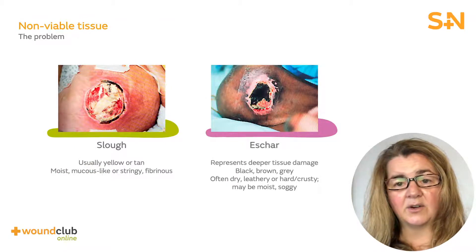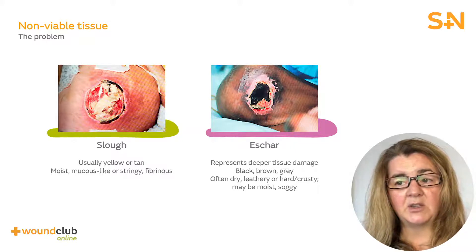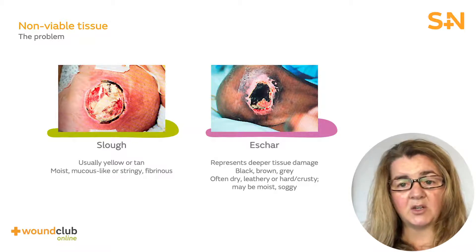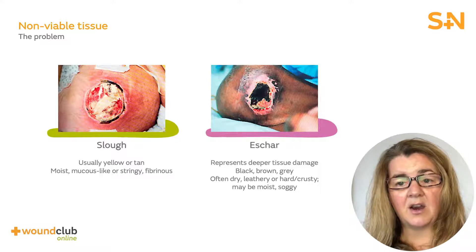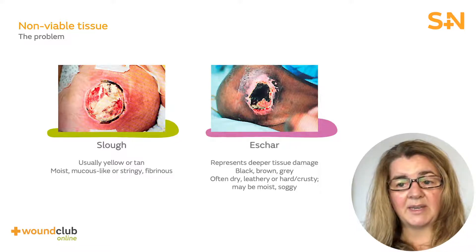Eschar or necrotic tissue represents deeper soft tissue damage. It is usually black, brown, or grey. Eschar may be moist, soggy, dry, leathery, hard, or crusty. Slough and eschar are often documented as a percentage of the wound bed.